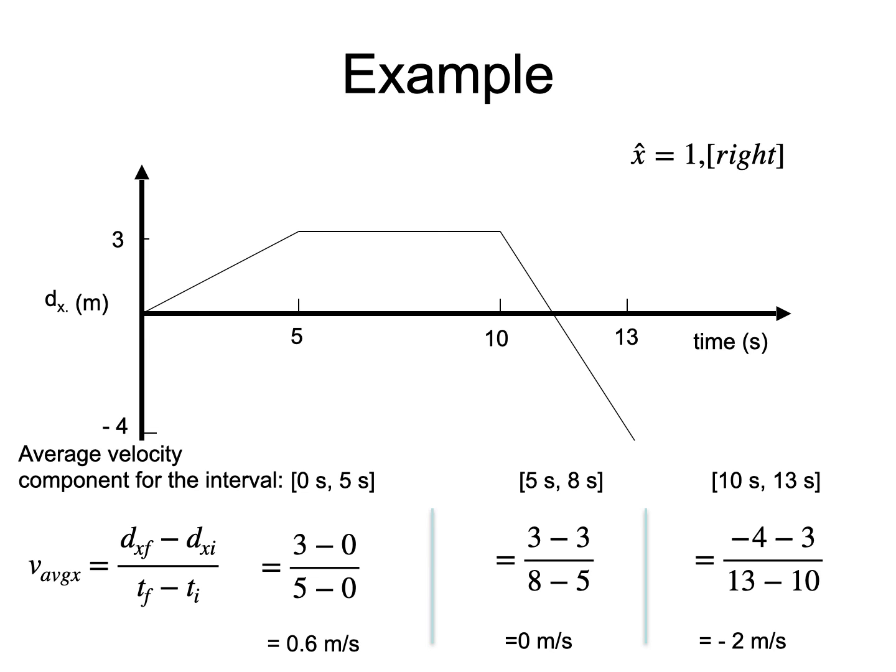It is negative, as it could have been seen from the graph because the slope of the line for time above 10 seconds is negative, which means that the object moves towards the left after time t equals 10 seconds.